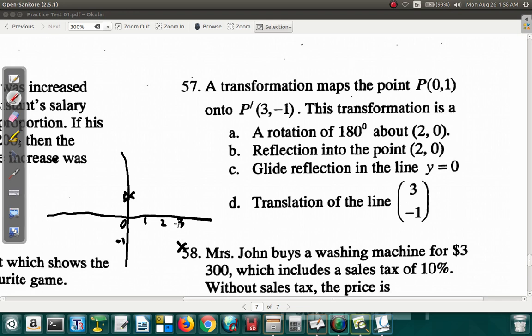Let's see. Rotation of 180 degrees about (2,0) - could that have been? Reflection into the point (2,0)? First of all, let's see if it is a rotation of 180 degrees about (2,0). The distance from 0 to 2 here - if it rotates here it should be the distance from 2 out here. So 1, 2 on the left, it should be on 4, not 3. So it is not A.